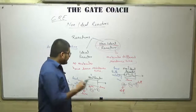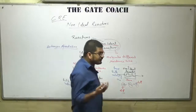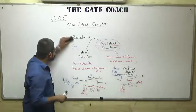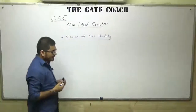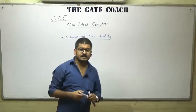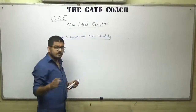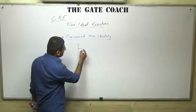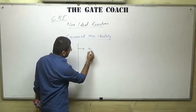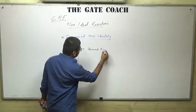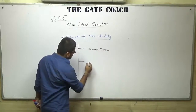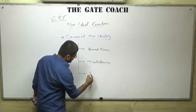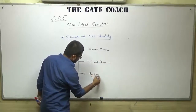Now we will talk about the causes of non-ideality — why molecules have different residence times. There are many reasons for non-ideality, but here we will talk about mainly three: dead zone, turbulence, and bypassing.